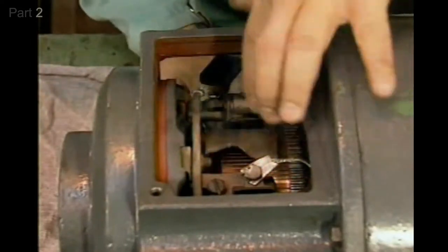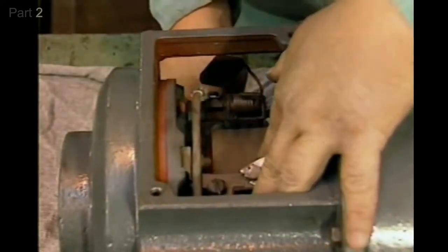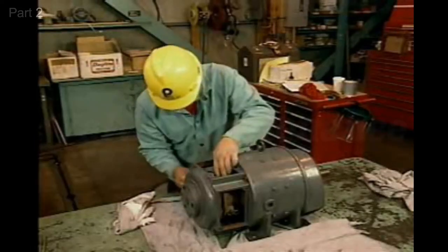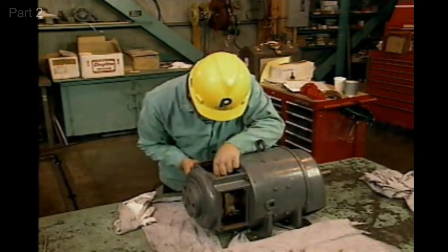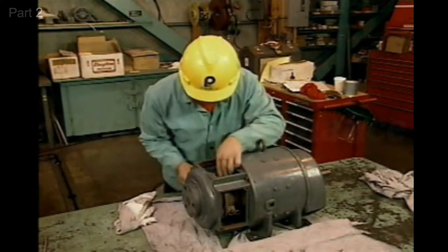The strip of flint paper is then placed on the commutator with the flint side out. The brush is placed in the brush holder and the tensioning device is adjusted to hold the brush tightly against the flint paper.